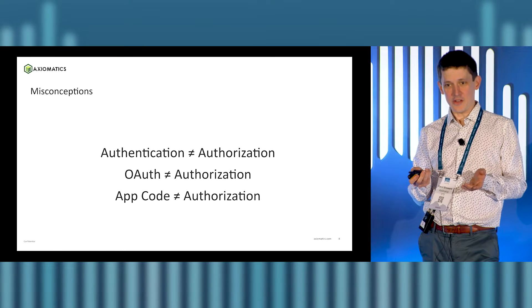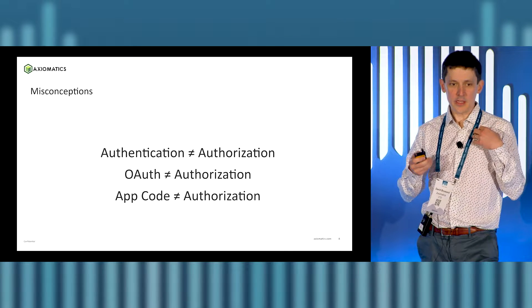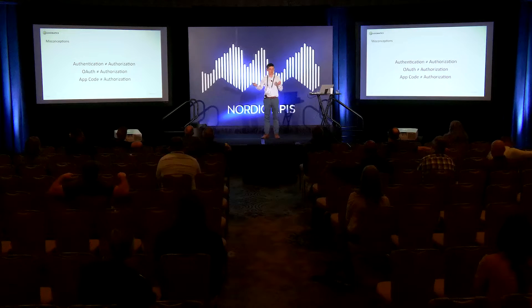I think you all understand that authentication is not authorization. Authentication is proving something about yourself — it doesn't have to be your identity. For example, if you go to drink, you have to be 21, or in Canada, 19. OAuth is also not authorization — I already mentioned that. It's access delegation. OAuth can help you build some form of authorization through the use of scopes and claims, but it doesn't go far enough.